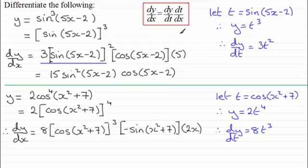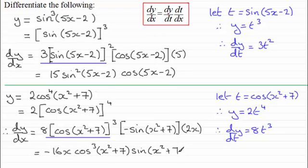So the dy/dt here is this part here, 8t³. Cleaning this up further gives us 8 times the minus there times 2x, which is minus 16x. And then I'm going to write cos³(x²+7), and then sin(x²+7). And there you have it.